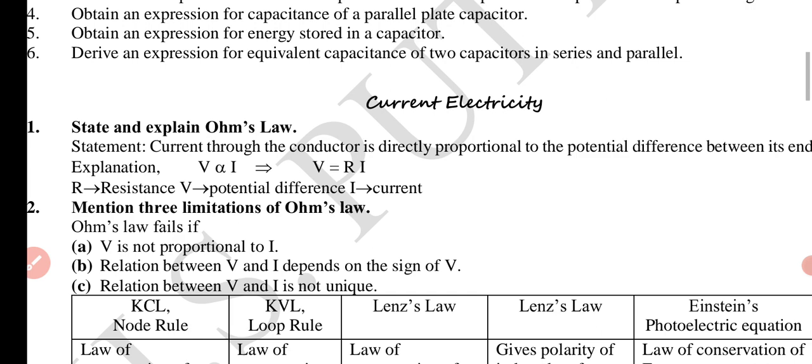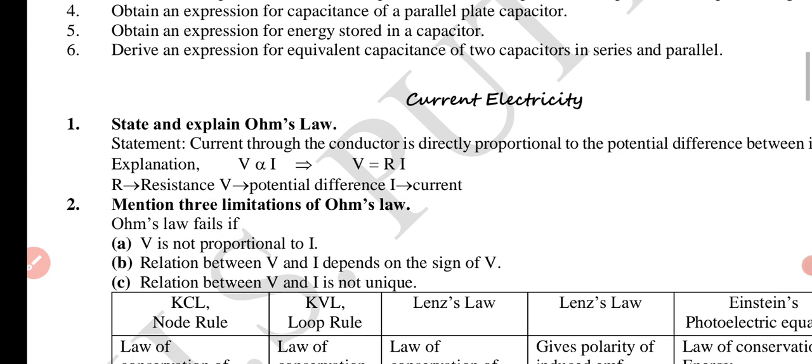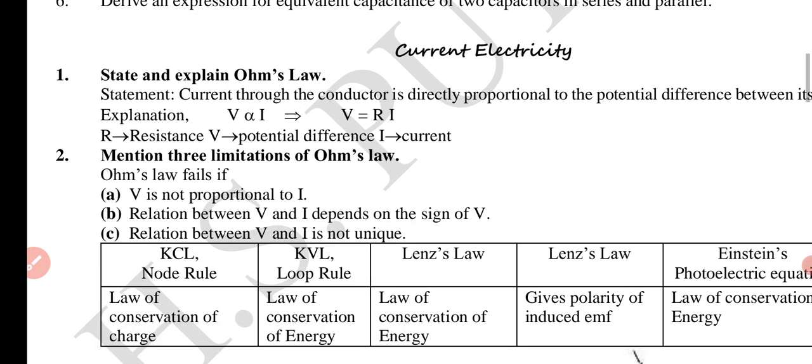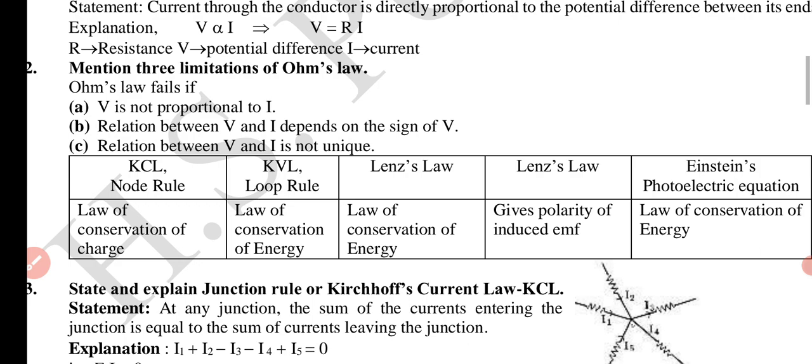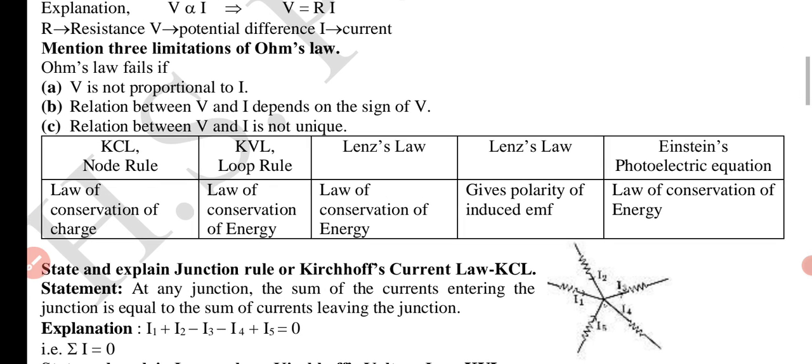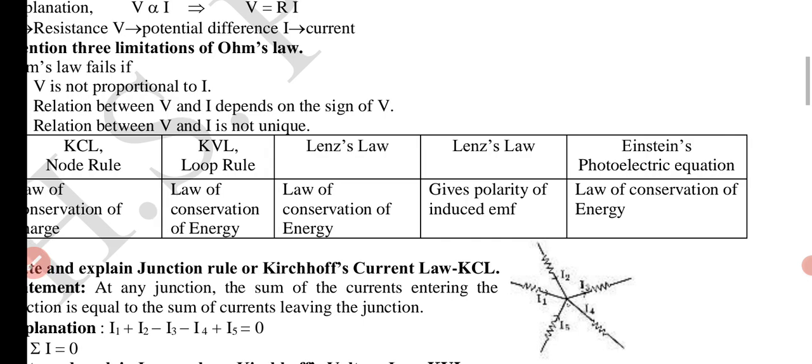Next chapter: Current electricity. State and explain Ohm's law. The statement: current through the conductor is directly proportional to the potential difference between its ends. V is directly proportional to I, V equals IR, where R is resistance, V is potential difference, I is current. Mention three limitations of Ohm's law: Ohm's law fails if V is not proportional to I, relation between V and I depends on the sign of V, relation between V and I is not linear. KCL node rule on the law of conservation of charge, KVL loop rule law of conservation of energy, Lenz's law on law of conservation of energy, Lenz's law gives polarity of induced EMF.